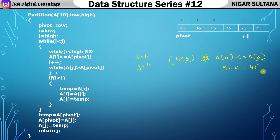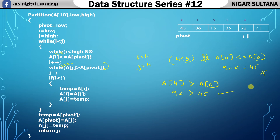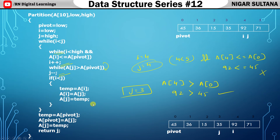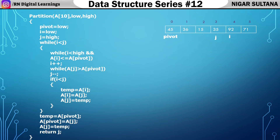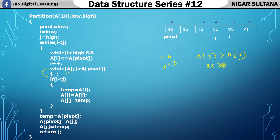Since the i condition is false, check the j while loop: is a[j]=a[4]=92 greater than 45? True — decrement j. J was four, now becomes three. In the array, j has shifted to position three. Running j while loop again: is a[3]=35 greater than 45? This is false — stop. Now i=4, j=3. Check if i < j: 4 is not less than 3 — false, so no swap of i and j.